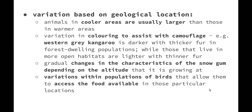We also have variations within populations of birds that allow them to access food available in particular locations. One prime example is the Galapagos finches. Charles Darwin noticed that there was a species of finch on various islands of the Galapagos archipelago, and on each island the finches had slightly different beak shapes, which allowed them to catch the food available on that particular island. They all started as the same species, but those with the particular beak shapes for those islands were able to survive, reproduce, and pass those characteristics onto their offspring.